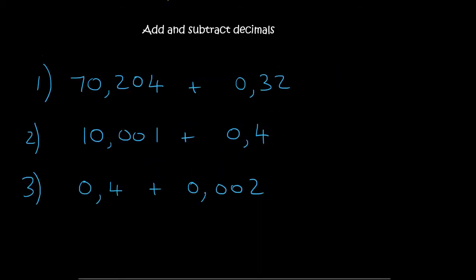So for the first one, always put the comma and the comma underneath each other. Then you fill in 70.204. That's a comma. And then 0.32. So the 0 is right next to the comma, so it goes there. And then the 32 must be written right next to the comma.